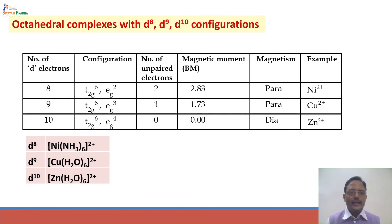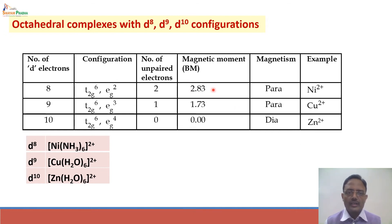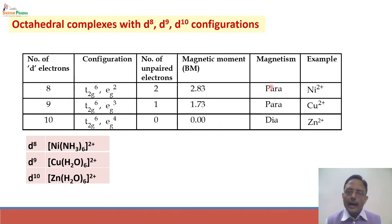For d8, d9, and d10 configurations, the six electrons in t2g are already paired up in all three cases. In d8, there are two unpaired electrons giving magnetic moment 2.83 BM. In d9, there is one unpaired electron giving 1.73 BM. In d10, there is no unpaired electron and magnetic moment is zero. The magnetic moment decreases from 2.83 to 1.73 to 0 going from d8 to d10. There is only one possible configuration with no high spin or low spin distinction. The d10 system is diamagnetic, so all complexes of Zn²⁺ are diamagnetic.